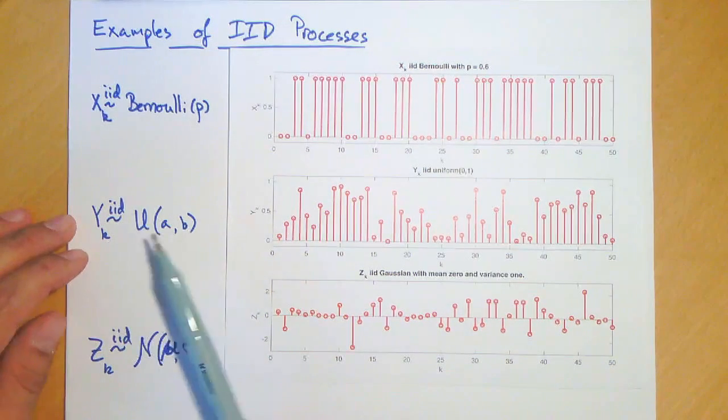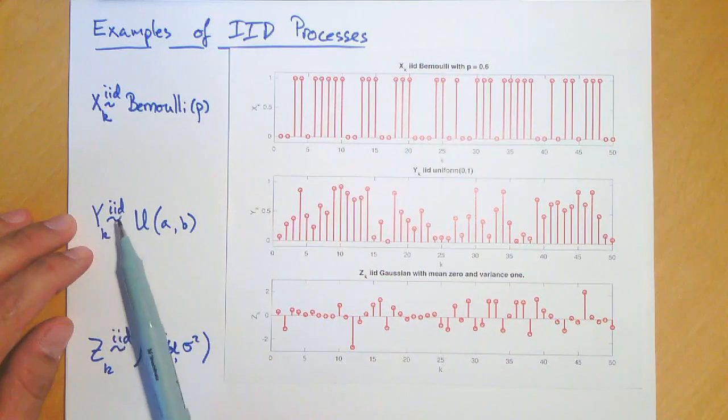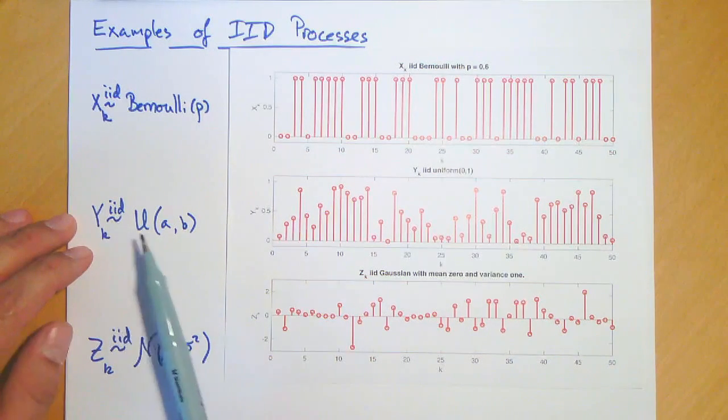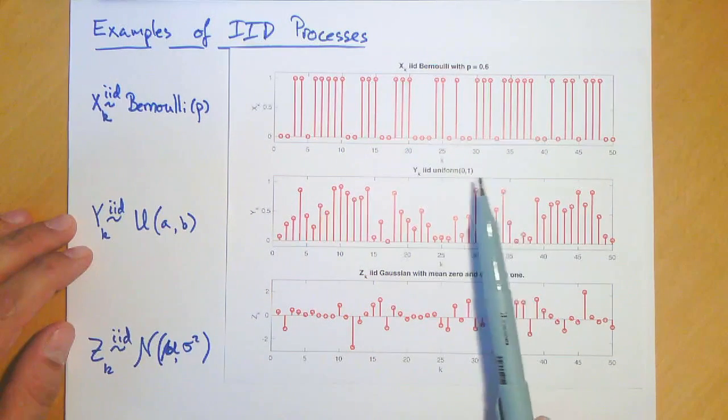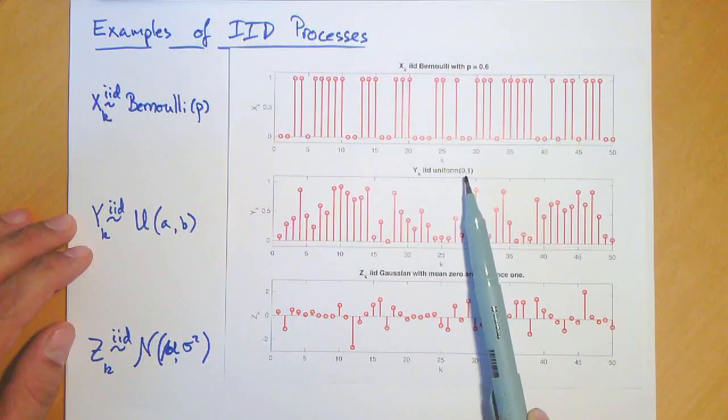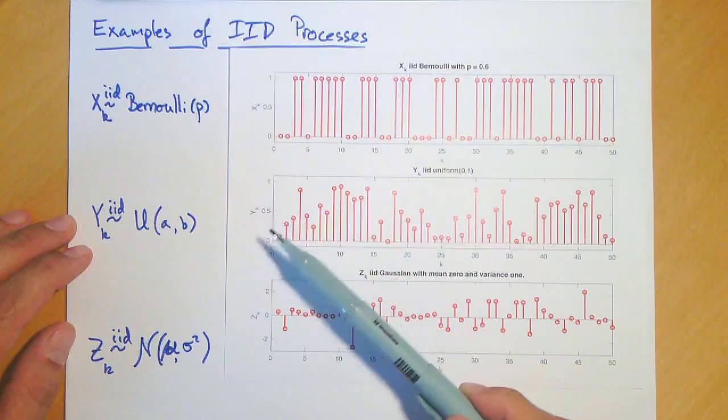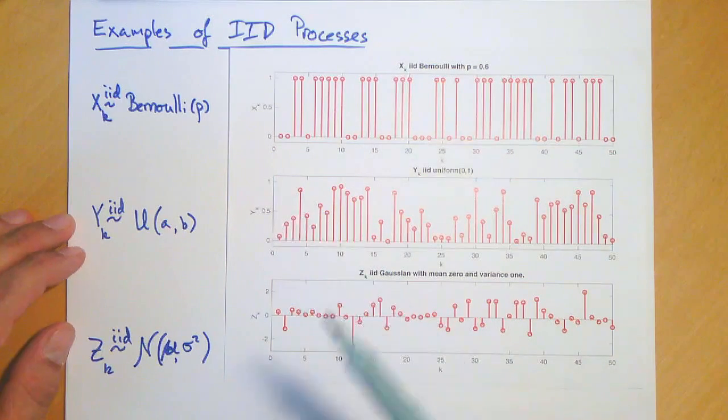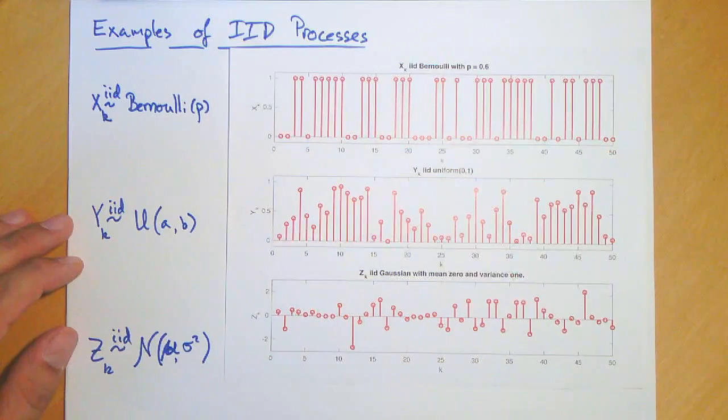Another important example is a uniform process. IID uniform process where all samples are generated IID according to a uniform distribution. In the example here, we have uniform distributed random variables at every time step. They are uniformly distributed between 0 and 1, and we see that they fluctuate in some random pattern.